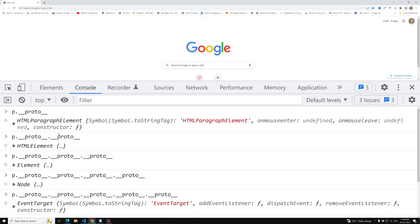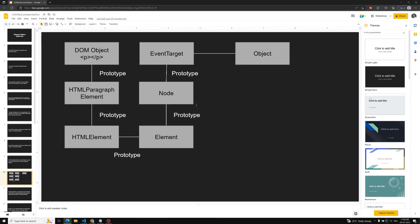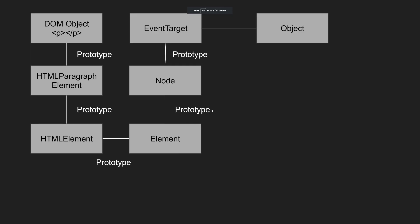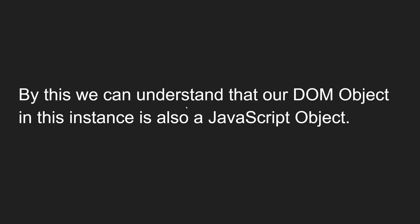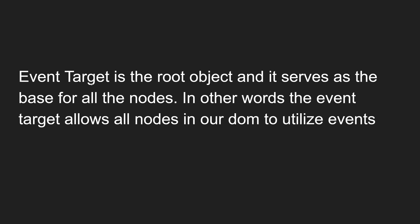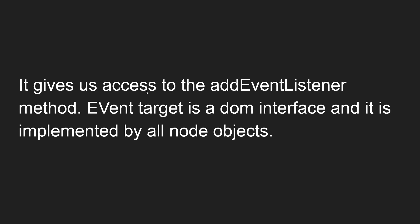Prototypes represent the inheritance chain. This is nothing but the element object hierarchy. Nearly all objects in JavaScript are descendants of the capital-O Object. A typical object inherits properties including methods from Object.prototype. So our DOM object — the paragraph element — is also ultimately a JavaScript object. EventTarget is the root object and serves as the base for all nodes. It allows all nodes in our DOM to utilize events.